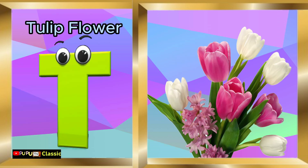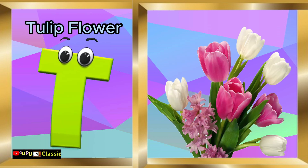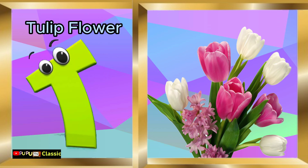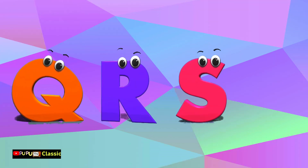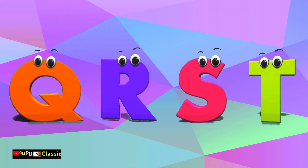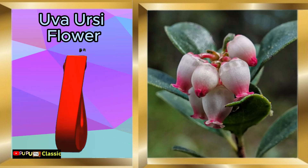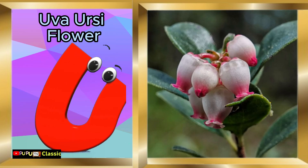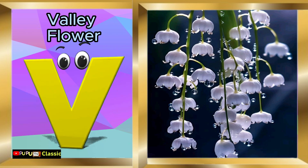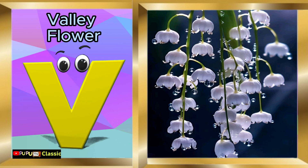T is for tulip flower, tulip flower. U is for uva ursi flower, uva ursi flower. V is for valley flower, valley flower.